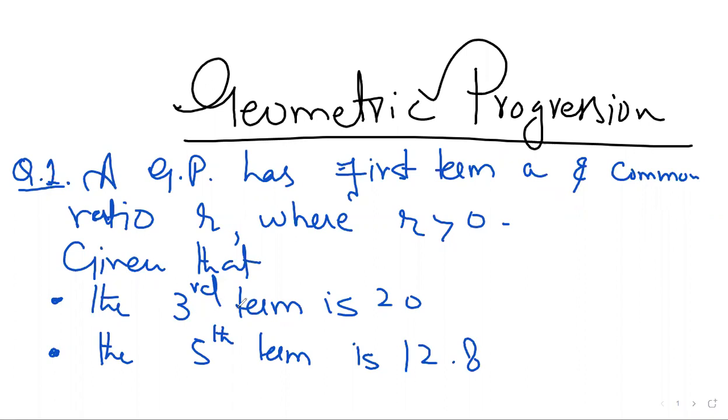Given that the third term is 20, which in simple terms means T3 equals 20. And the fifth term, T5, is equal to 12.8.